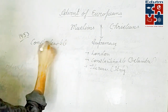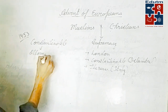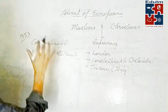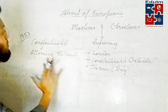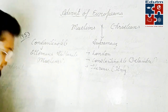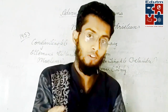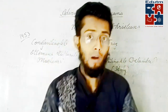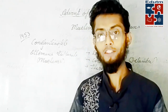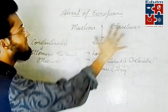In 1453, Constantinople was captured by the Usmani Sultanate, which were Muslims. The Usmani Sultanate was founded by Usman, who was the son of Ertugrul Ghazi — you may have heard of Ertugrul Ghazi. Usman established the Usmani Empire.